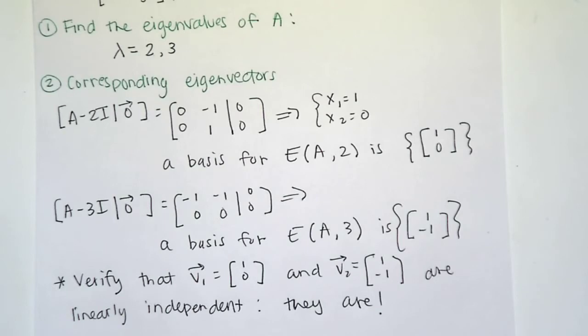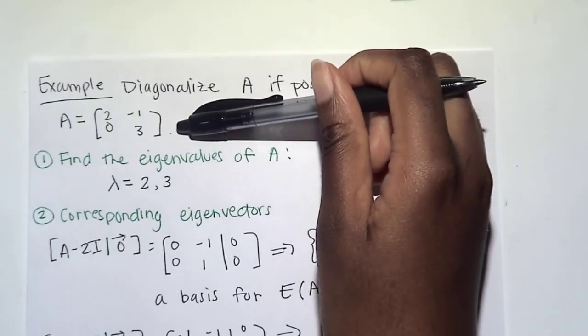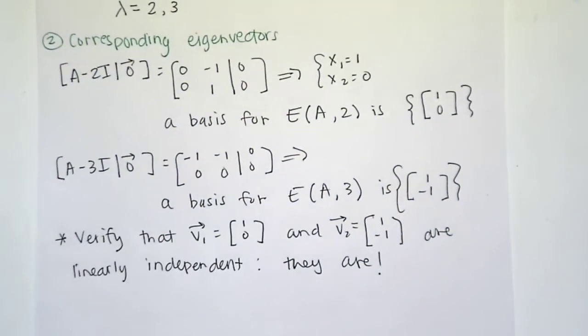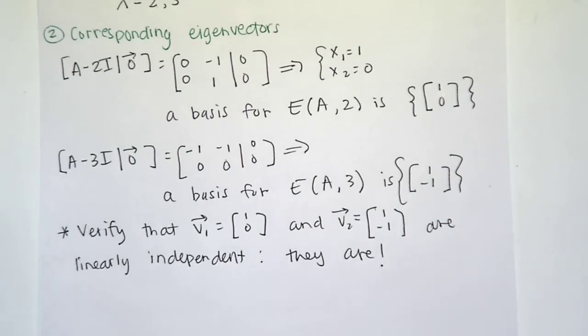Okay, so this works perfectly for our diagonalization theorem because A is a 2x2 matrix, and we have two linearly independent eigenvectors.